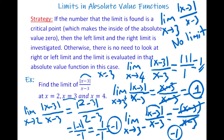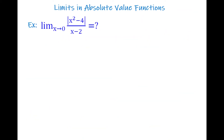Let's take a look at the next example. When x goes to 0, find the limit of |x² − 4| / (x − 2). We can solve this in two ways. Because 0 is not a critical point in our function, we can just evaluate it directly.